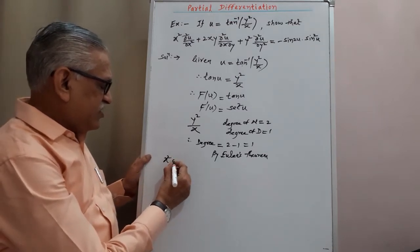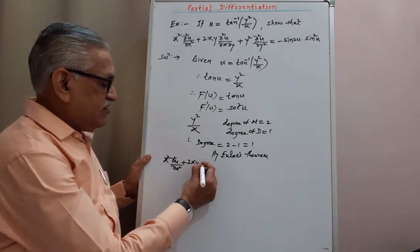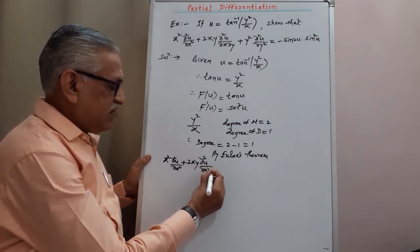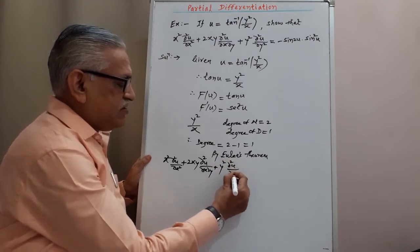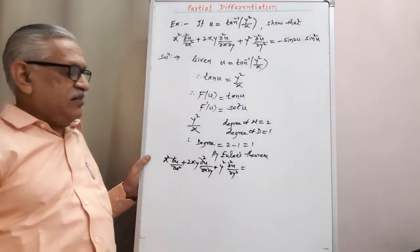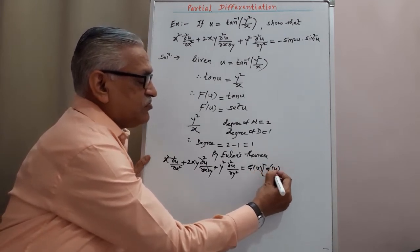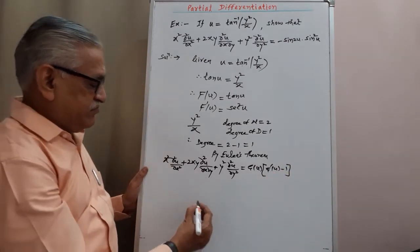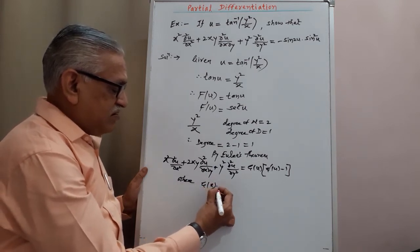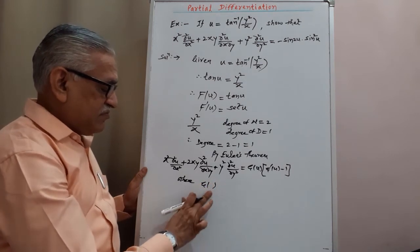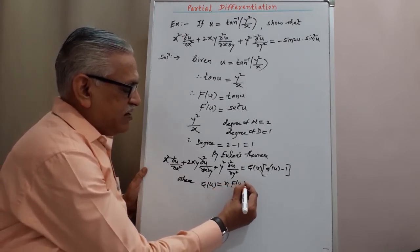The result from Euler's theorem is: x² ∂²u/∂x² + 2xy ∂²u/∂x∂y + y² ∂²u/∂y² = g(u) · [g'(u) − 1], where the value of g(u) is obtained by n·f(u) / f'(u).